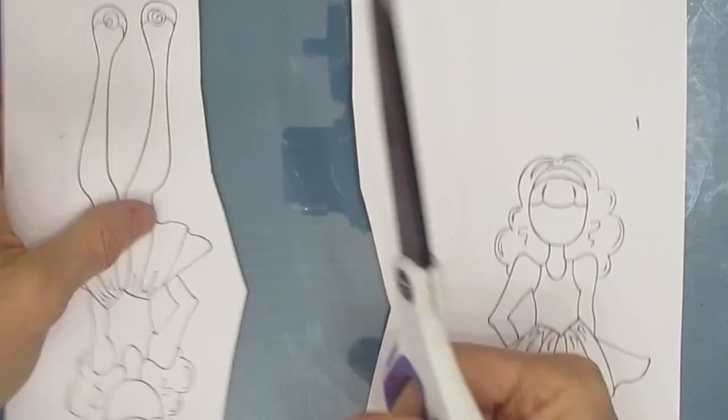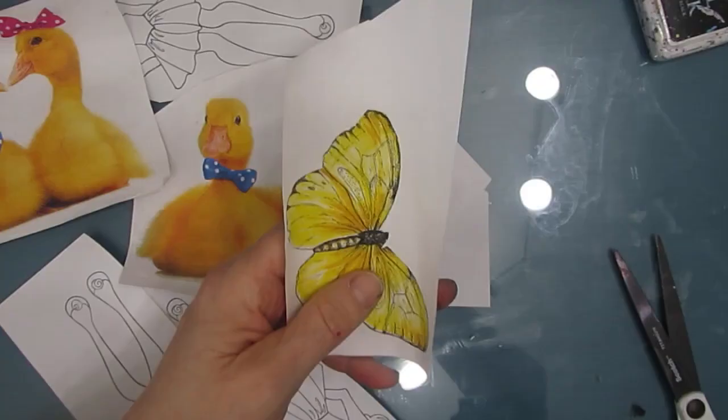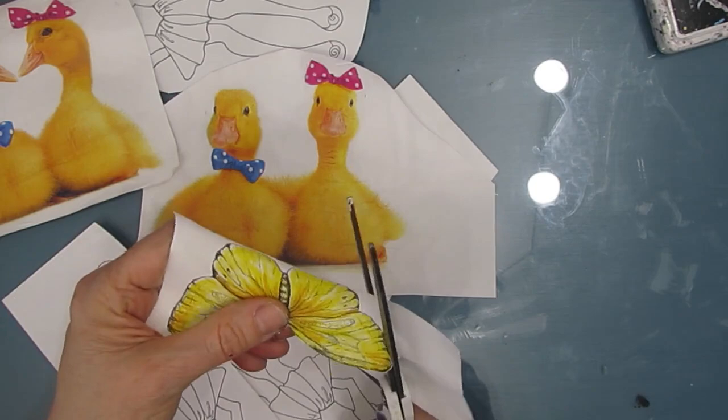So the next step is to fussy cut things out. And quite often, I do this in front of the TV. I have the whole pile there. And then I go in and watch TV. And I do my fussy cutting. And no, I'm not going to make you watch me cut everything out. But it's just easy peasy.